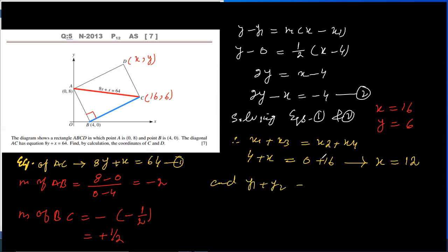So Y1 plus Y3 equals Y2 plus Y4. Here, Y plus 0 equals 8 plus 6. So in this way, Y is 14.